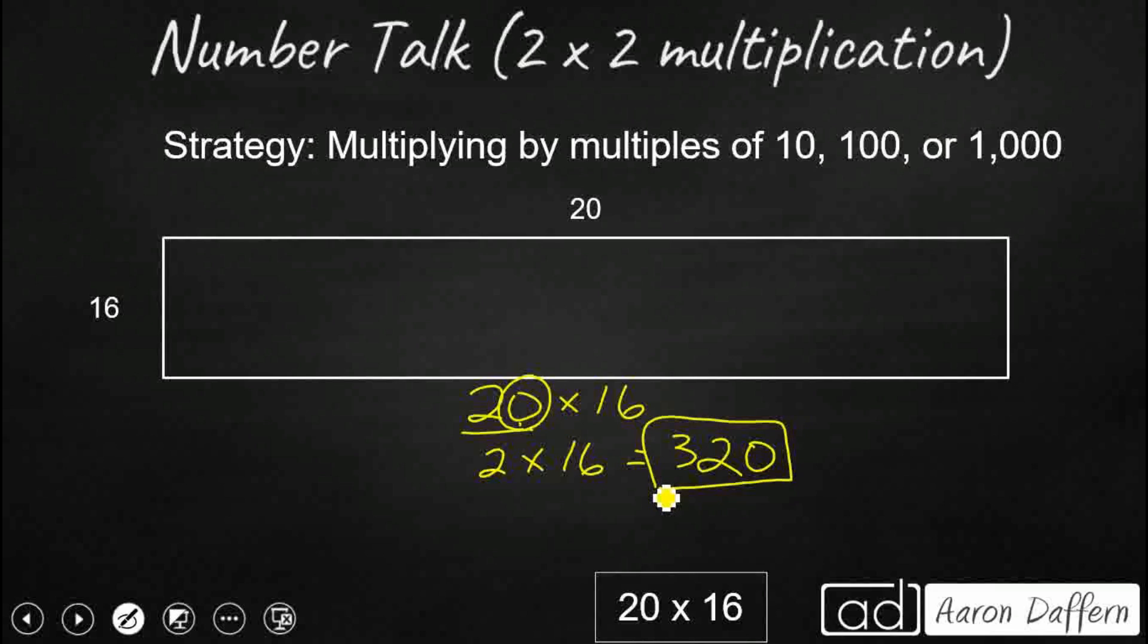So multiplying by multiples of 10, 100, or 1,000 should be fairly simple. You just take your non-zero digits, multiply them, and then you add any zeros at the end.